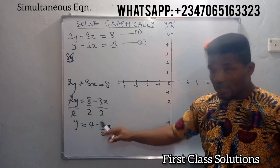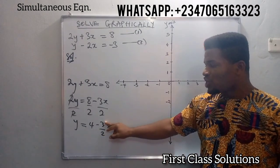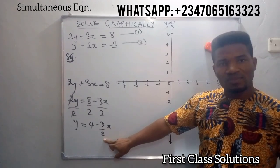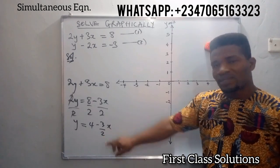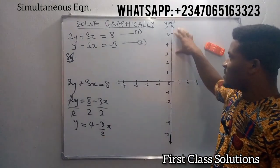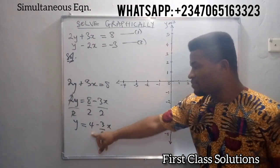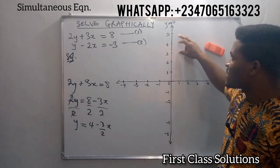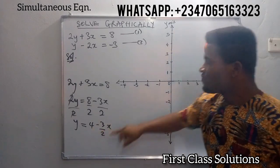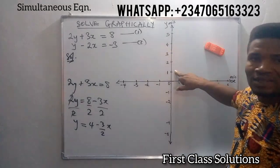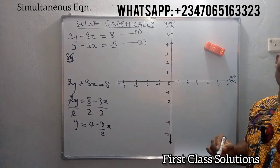This minus 3 over 2 is a negative gradient, no doubt. It means that we have a 3 change in y over 2 change in x. On the y-axis, all these values will be represented. For the intercept, we have a positive intercept. On the axis of y, we're going to locate this 4 on the positive axis of y. We've located our 4 on the positive axis of y.